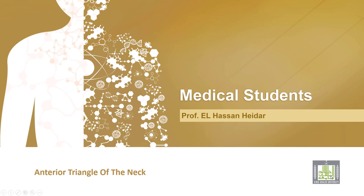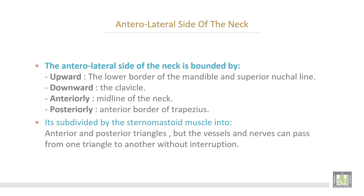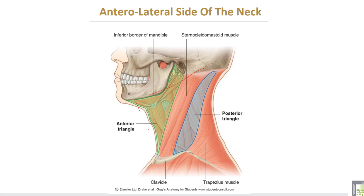The anterolateral side of the neck is formed upward by the lower border of the mandible and the superior nuchal line, downward by the clavicle, anteriorly by the midline of the neck, and posteriorly by the anterior border of the trapezius muscle. It is subdivided by the sternomastoid muscle into anterior and posterior triangles, but vessels and nerves can pass from one triangle to another without interruption.